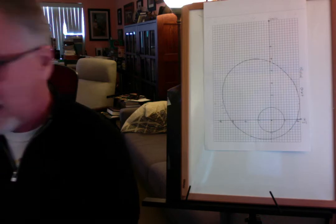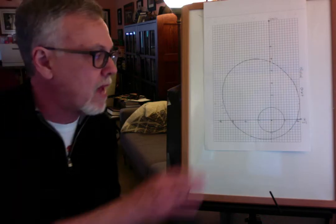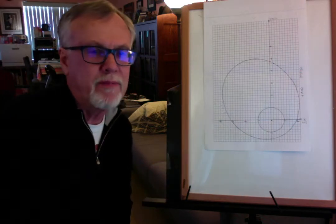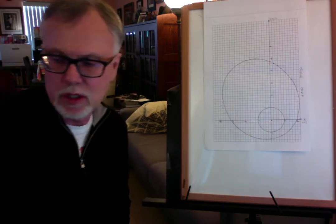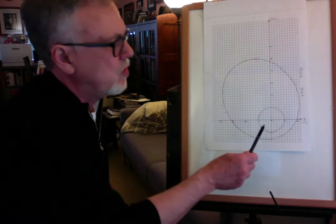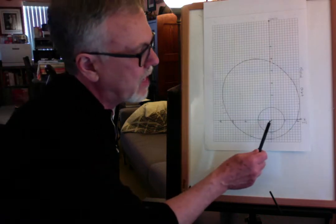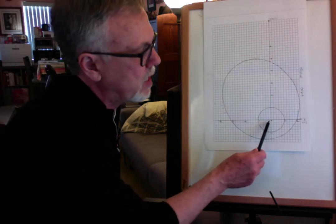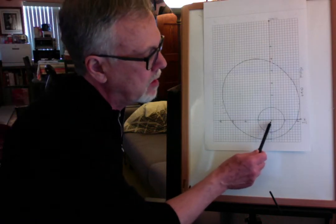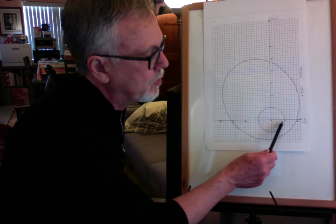And now you've started graphing this particular graph. Just to remind you, you have it so that the radius of the moon takes up five of those grids, and that's a unit of one.